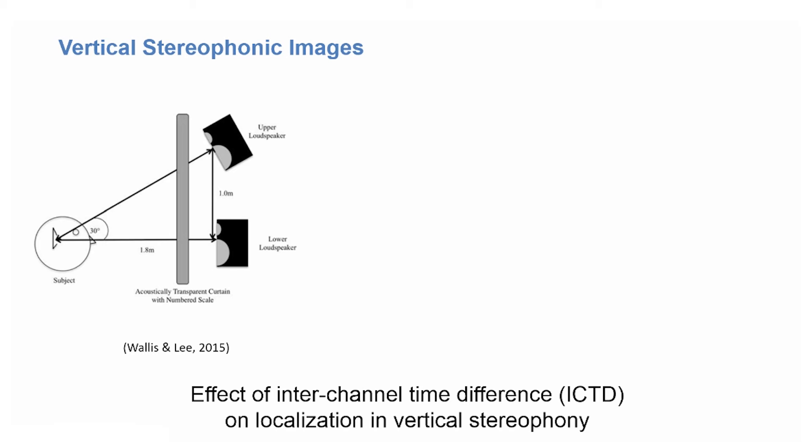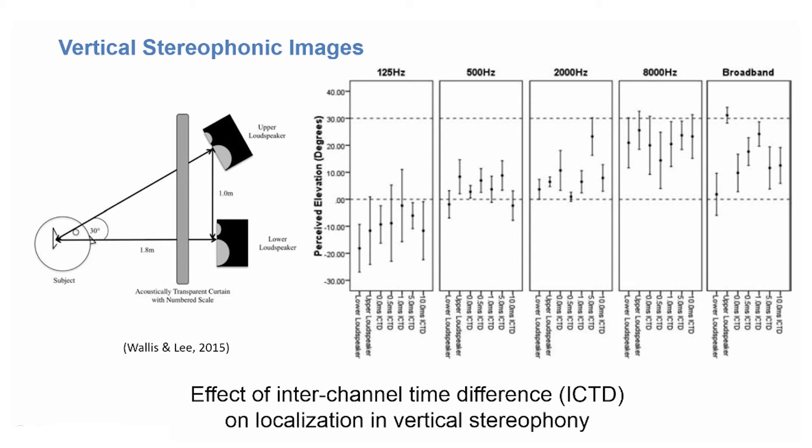Two loudspeakers with a 30-degree angle in between were fed with band-limited and broadband pink noise. The upper one delayed with respect to the lower one by different time delays between 0 and 10 milliseconds. So, with a perfect localization, you would expect that the lower and the upper loudspeakers, played here, are correctly identified when they play alone, and that you get a gradual transition from top to down with increasing time delay, as you can see here.